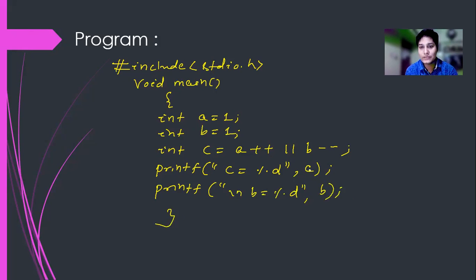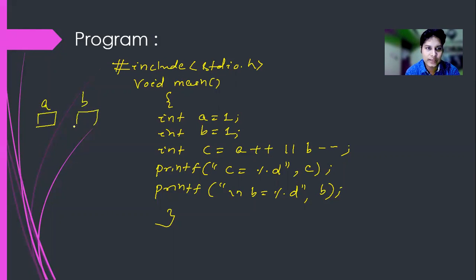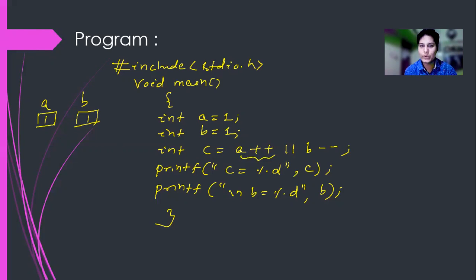We have to see what the value of c is and what the value of b is. Here I'm declaring two variables: a = 1 and b = 1. In post-increment operator, first the value is assigned, then the value is incremented.